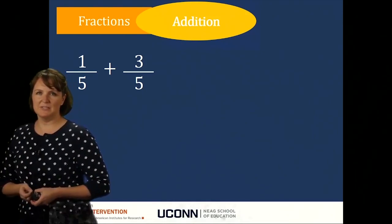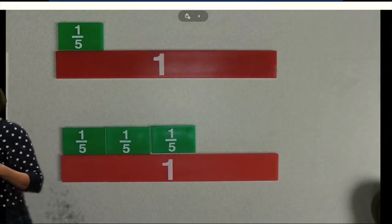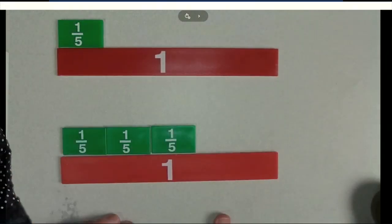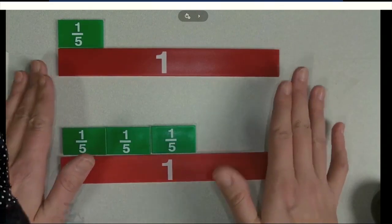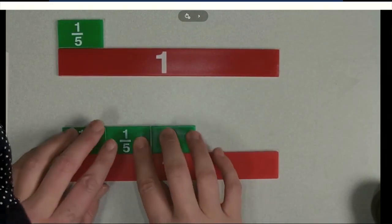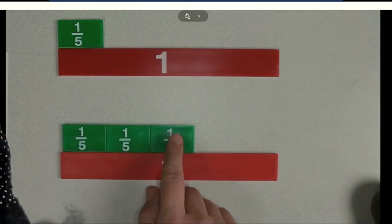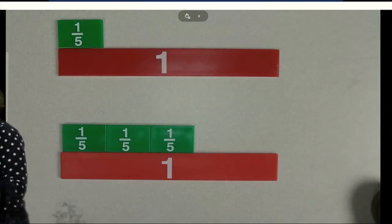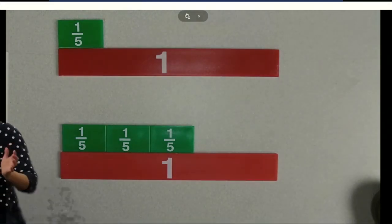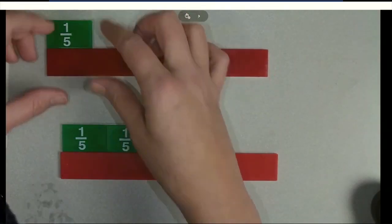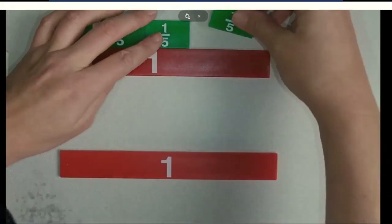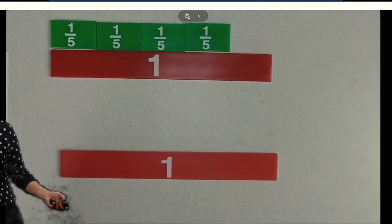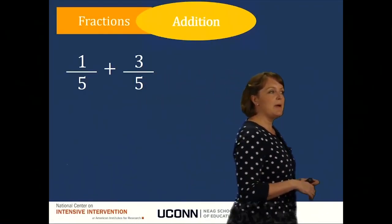Let's go ahead and solve this problem: one-fifth plus three-fifths. Here I have the fraction one-fifth. Remember when we're showing fractions, we always want to compare the fraction to the whole. And to that I'm adding three-fifths — one, two, three. When the fractional parts are the same size or have the same value, we can add those together without having to do anything else. So one-fifth plus three-fifths equals four-fifths. Easy.